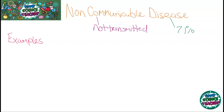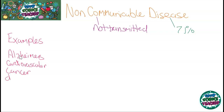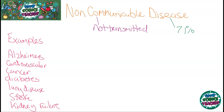Some examples of non-communicable diseases are Alzheimer's, cardiovascular disease, cancer, diabetes, any lung disease, stroke, and kidney failure. The leading cause of death from non-communicable diseases is cardiovascular disease, which accounts for 21% of all deaths by non-communicable diseases.